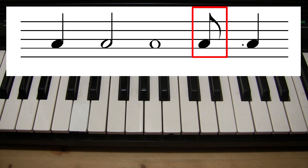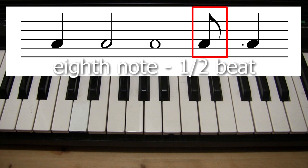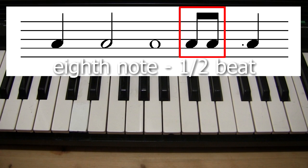And this one that's a black circle with a line and a flag is called an eighth note. So it's played for half as long as a quarter note, or for half a beat. You might also see two eighth notes in a row drawn connected together like this with a beam. They're still just eighth notes.